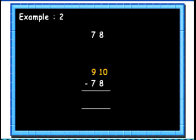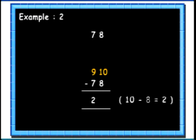Let me show you how. 9 minus 7 is 2. 10 minus 8 is 2. So we get the complement of this number as 22.